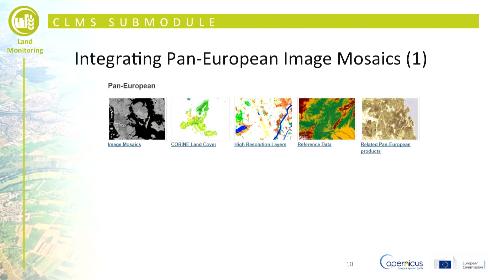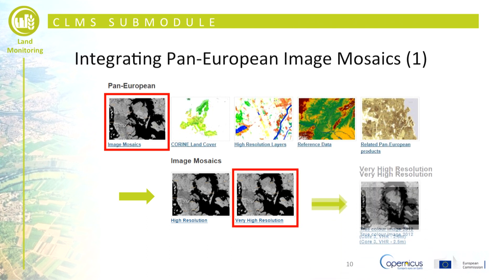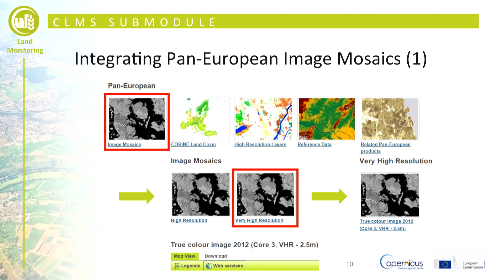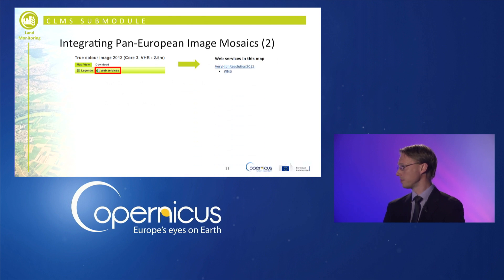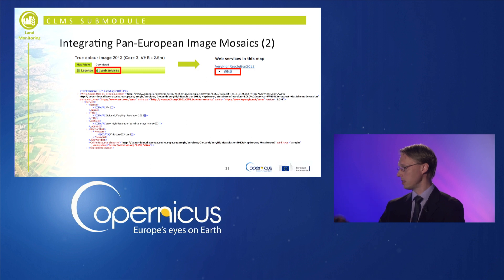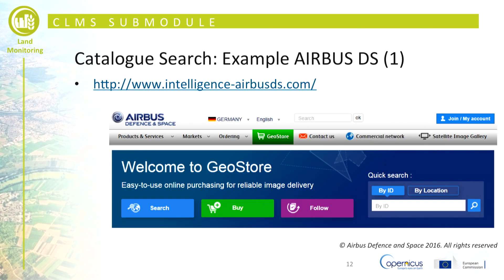The next dataset is the pan-European image mosaics, accessible via the portal. We use the very high resolution version to see damages in detail — specifically the true color image, which can be downloaded or included as a web mapping service. You can introduce the WMS into your GIS environment using the address provided, allowing you to integrate and link it directly to your GIS software.